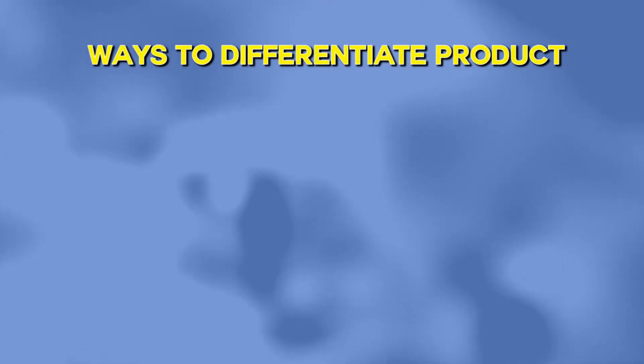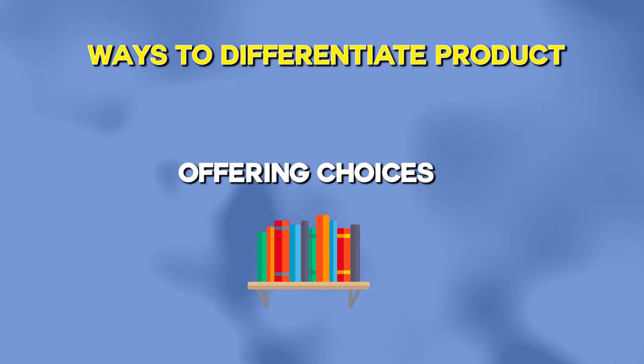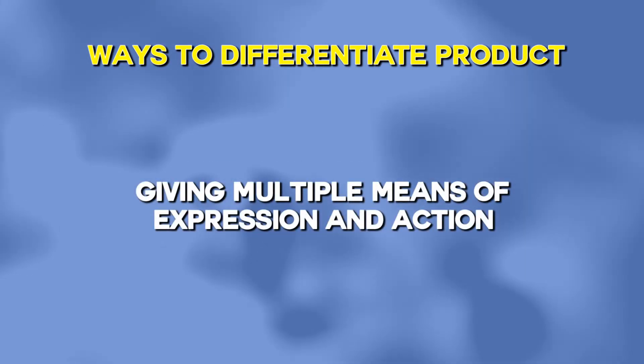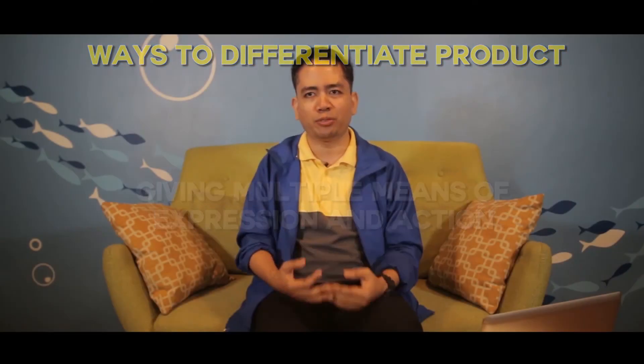So there you have it. We can differentiate product by offering students choices, and by giving multiple means of expression and action. The three ways to differentiate — content, process, and product — will be demonstrated in a lesson I'm developing. Allow me to show you this lesson that's currently being developed on digital citizenship for grade 11 ICT students, made using the Genu Learning Management System.